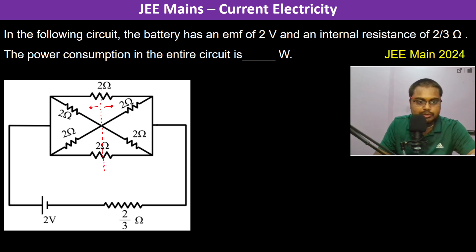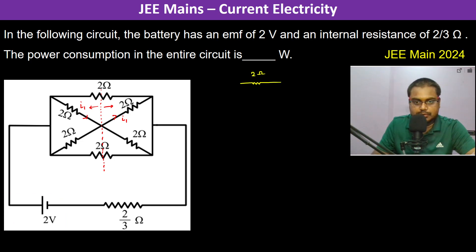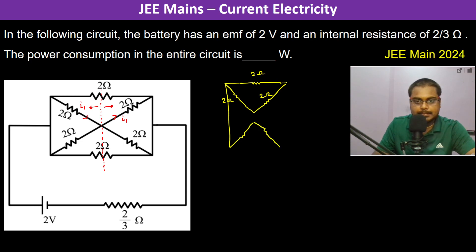This side and this side are both the same, so whatever current is entering here as I₁, the same current will be leaving here. Therefore the circuit gets reduced — it becomes 2 ohm, then 2 ohm, and again 2 ohm.